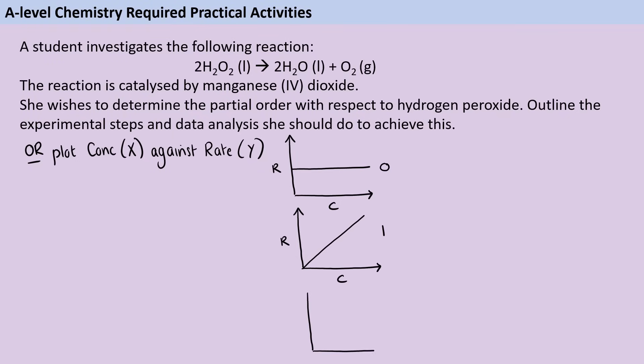And then, of course, our third option is that we get this exponential relationship between rate and concentration. Sorry, that's a bit of a badly drawn graph, but never mind. In which case, it's second order.